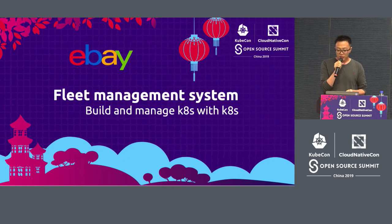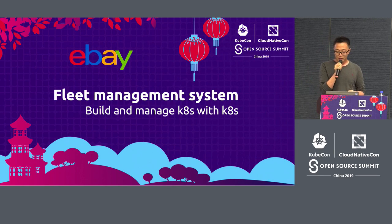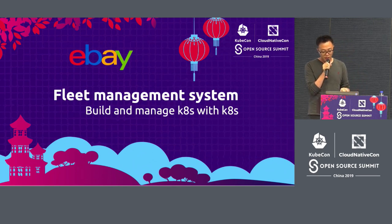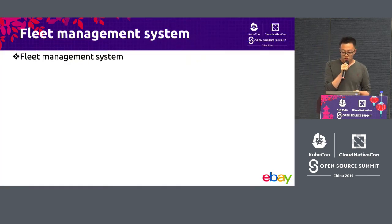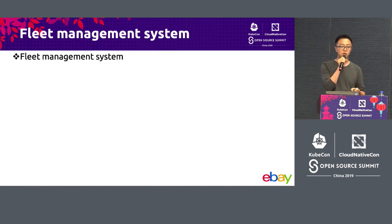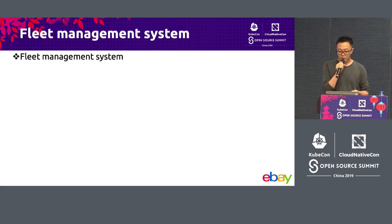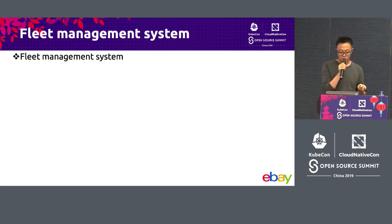So now after getting some idea on eBay's Kubernetes footprint, you might wonder how did we get there? The short answer is we use Kubernetes to make it all happen. That is our fleet management system to build and manage eBay's private cloud — running Kubernetes with Kubernetes. As most of you know, Kubernetes is not just a container platform. It is a portable system that can be used to do many different things in many different ways. We use it to manage and build our private cloud — that is our fleet management system.